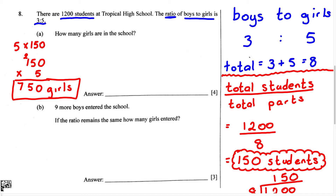Don't forget to write it in the space provided. So our answer is going to be 750. If you didn't use this method, that's okay. If you used five over eight multiplied by 1,200, and when you simplified it you still got 750, that answer is still correct. There is more than one method you can use to solve this problem. The method I used was solving for one part and multiplying it by the number of parts that represented girls.